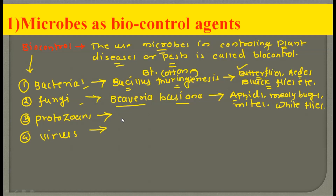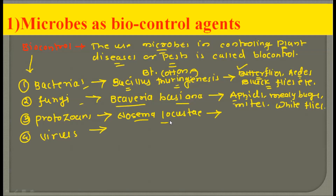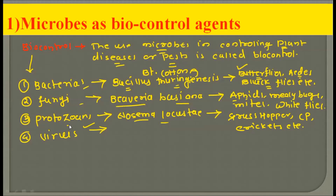Next we have protozoa. The example for protozoa is Nosema locustae. This protozoan is able to avoid the development of grasshoppers, caterpillars, and crickets.